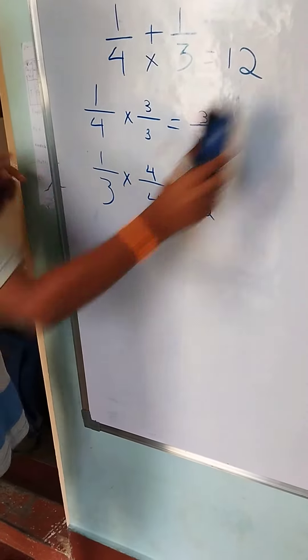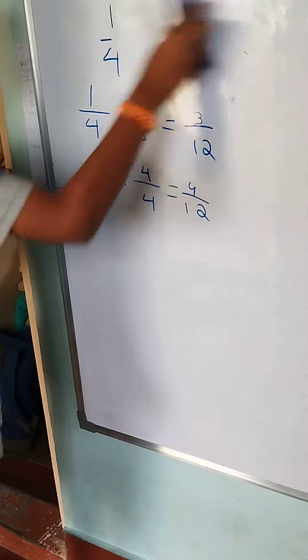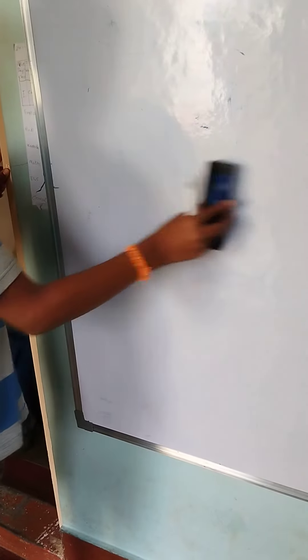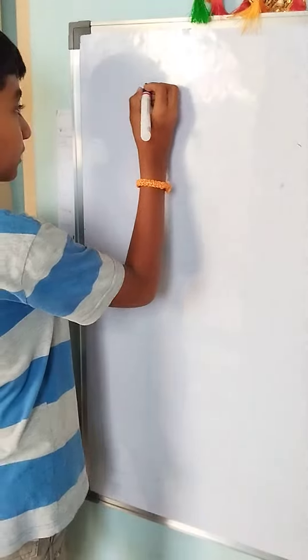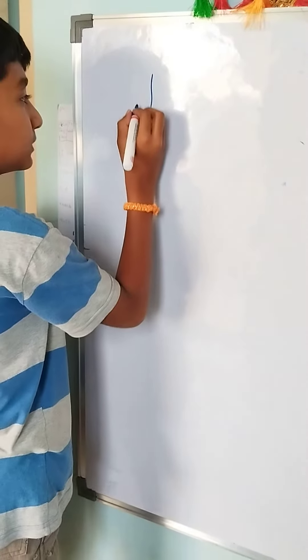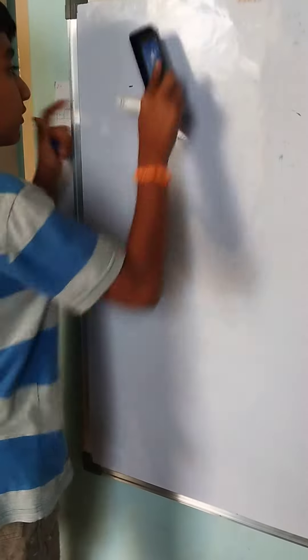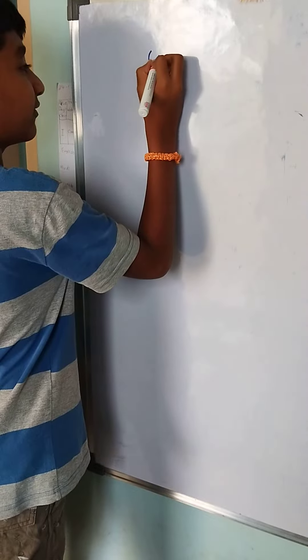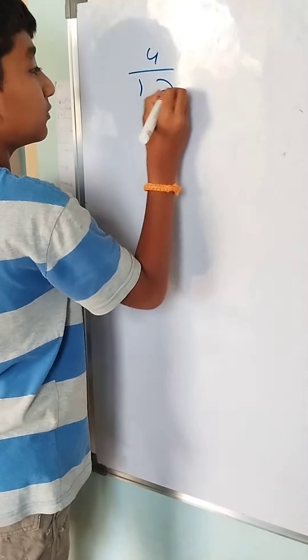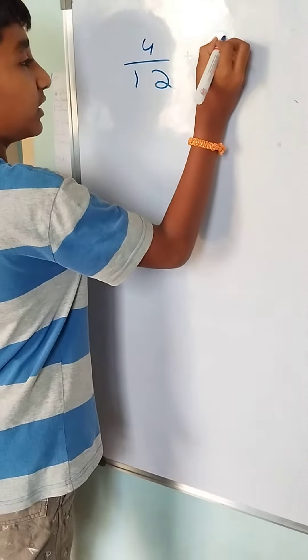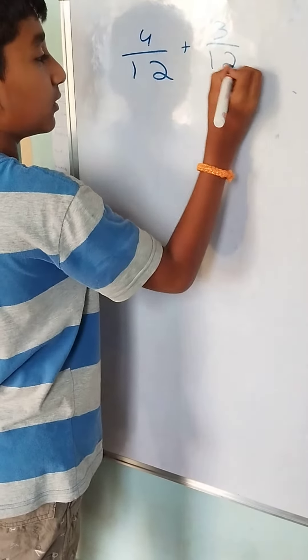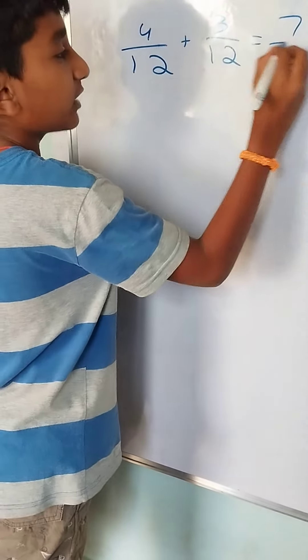Now we got 4 by 12 plus 3 by 12. So the answer is 7 by 12.